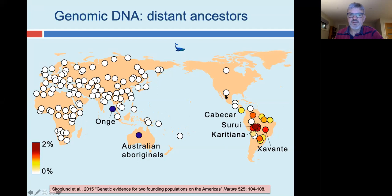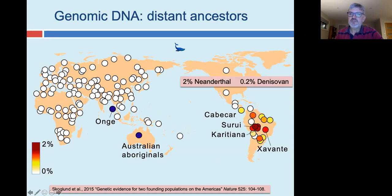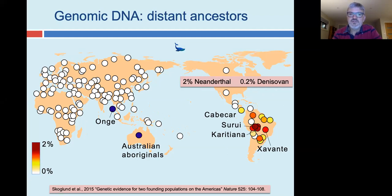There are also other ancient ancestors found in the ancestry of indigenous Americans — Neanderthals and Denisovans. Most of you have probably heard that many of us carry very small proportions of Neanderthal DNA, and that's the case with indigenous Americans as well. There is another ancient group called the Denisovans that occupied parts of Eastern Asia, and very small traces of Denisovan DNA have been found in several indigenous groups in the Americas.